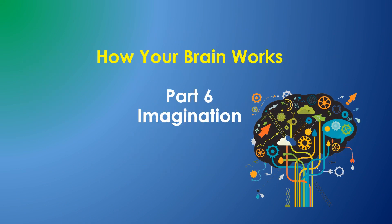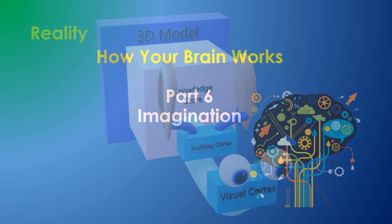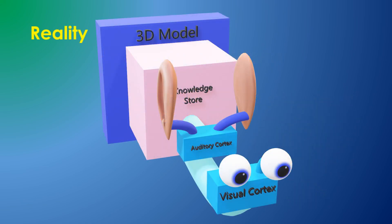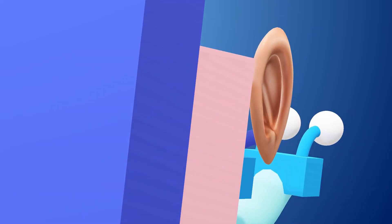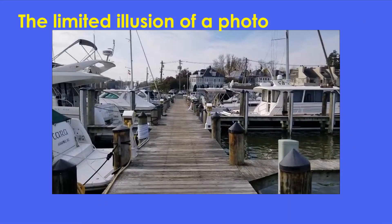How Your Brain Works Part 6: Imagination. In the last video, I presented the idea of an internal reality model, which is created based on inputs from your multiple senses after the information has been processed by various areas of your brain. Your brain does its best to interpret the input and make sense of your surroundings.